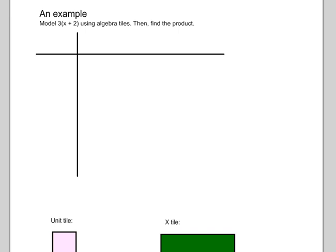What you're going to do first is the 3, we're going to put along this left bar, because we're essentially setting up like a multiplication problem. It's asking us to do 3 times x plus 2, so we use a multiplication table structure. We're going to put 3 unit tiles in.